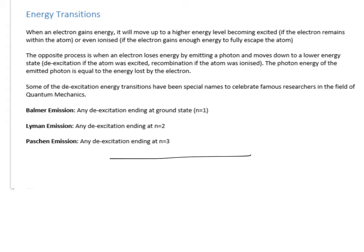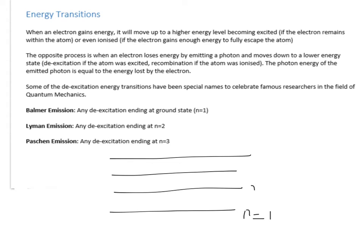We often represent atoms with an energy level diagram. The lowest energy state is n equals 1, with ascending energy states above it. For example, if an electron is at n equals 4, the Balmer emission goes directly down to n equals 1, the Lyman emission goes to n equals 2, and the Paschen emission goes to n equals 3. There is no set reason a photon takes a given transition — all of these transitions can occur. With a large number of excited atoms you get all these different photon energies emitted, which is why a range of different wavelengths is given off by different atoms.